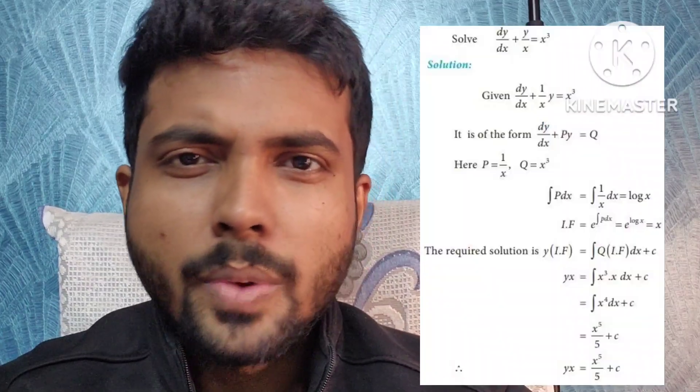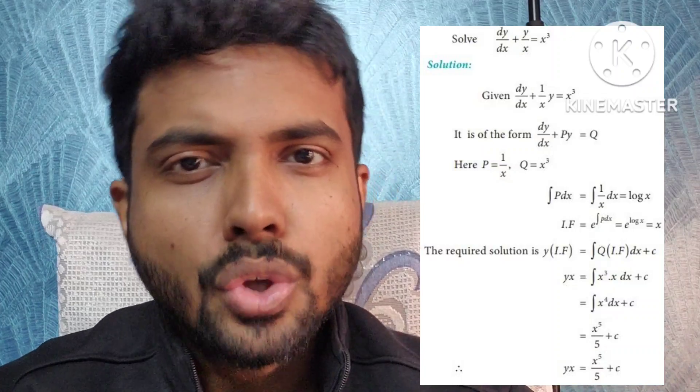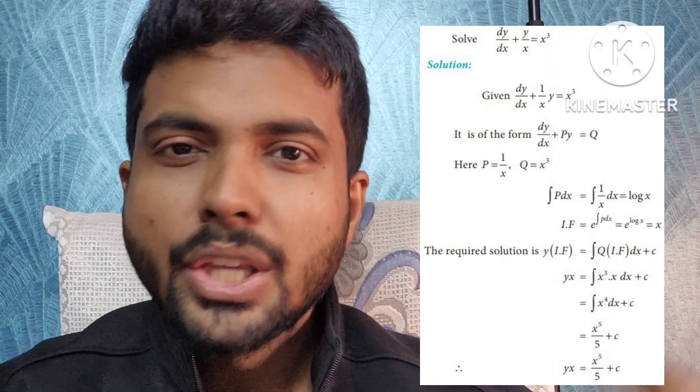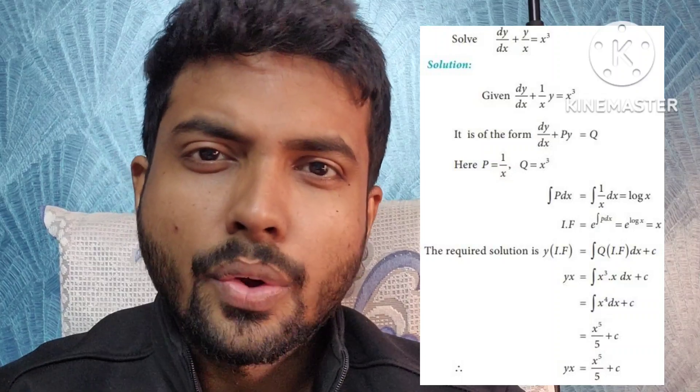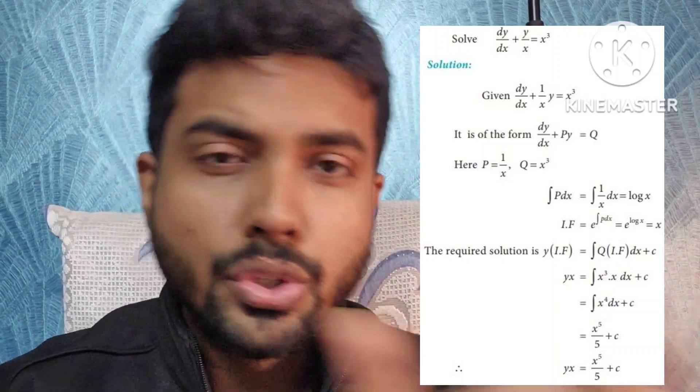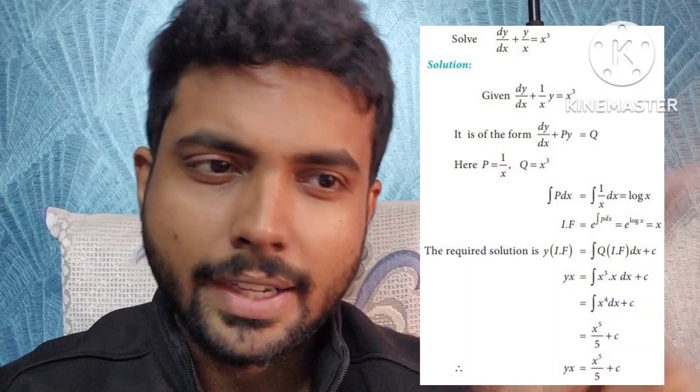Talking about the differential equation part — it has two parts. One is your simple linear differential equation, and second is the second order differential equation, which you can solve in the CF plus PI format. The simple linear differential equation is dy/dx + Py = Q, where P and Q are functions of x or constants. It can be solved using the integrating factor, which is e to the power of integration of P dx, and the general solution is y times integrating factor equals integration of Q dx plus C.